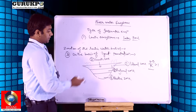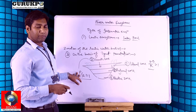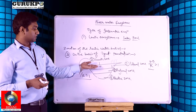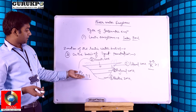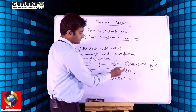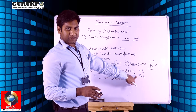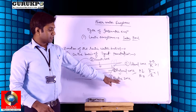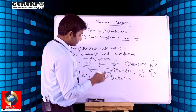In the limnetic zone, the P/R ratio is equal to one because photosynthesis rate balances respiration rate — phytoplankton synthesize organic matter and both plants and animals respire. In the profundal zone, photosynthesis rate is lower than respiration, so the P/R ratio is less than one. In the benthic zone, light is very low or absent, so photosynthesis cannot proceed properly.